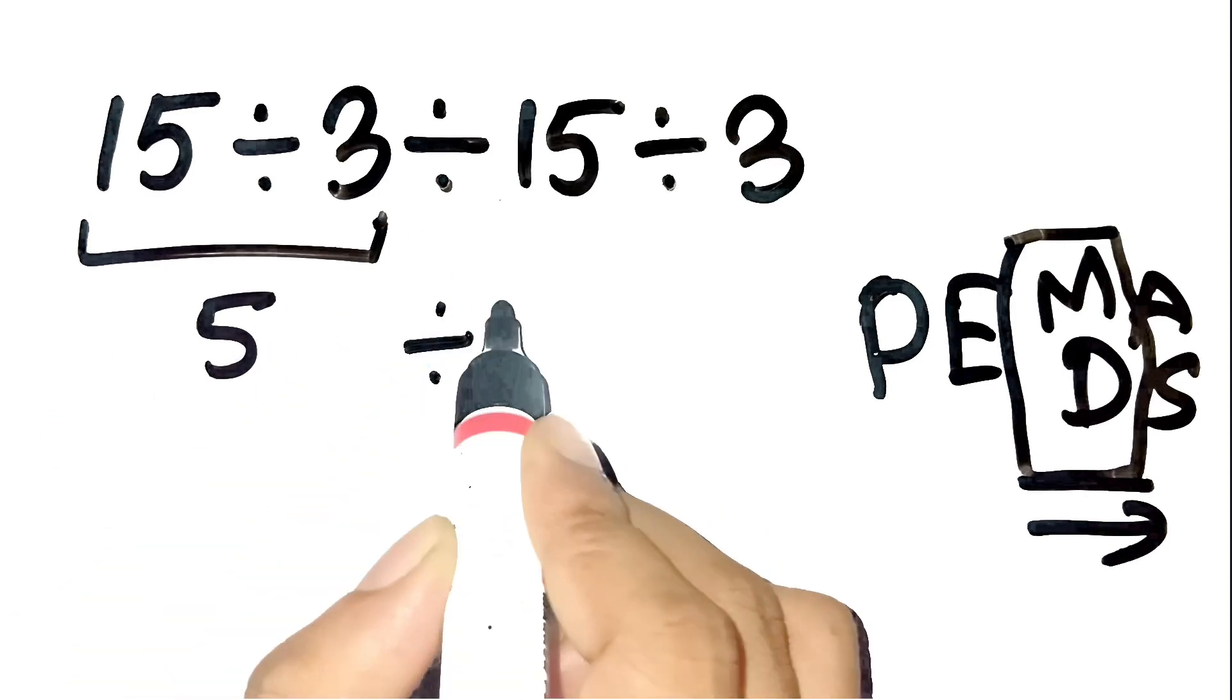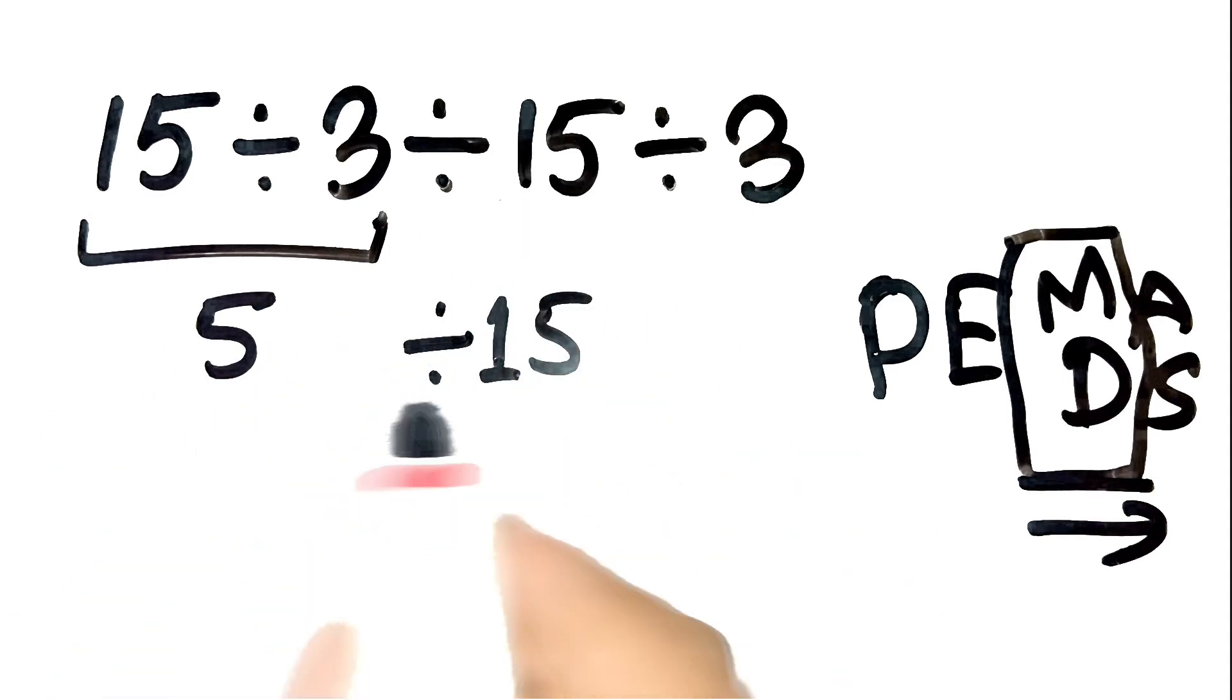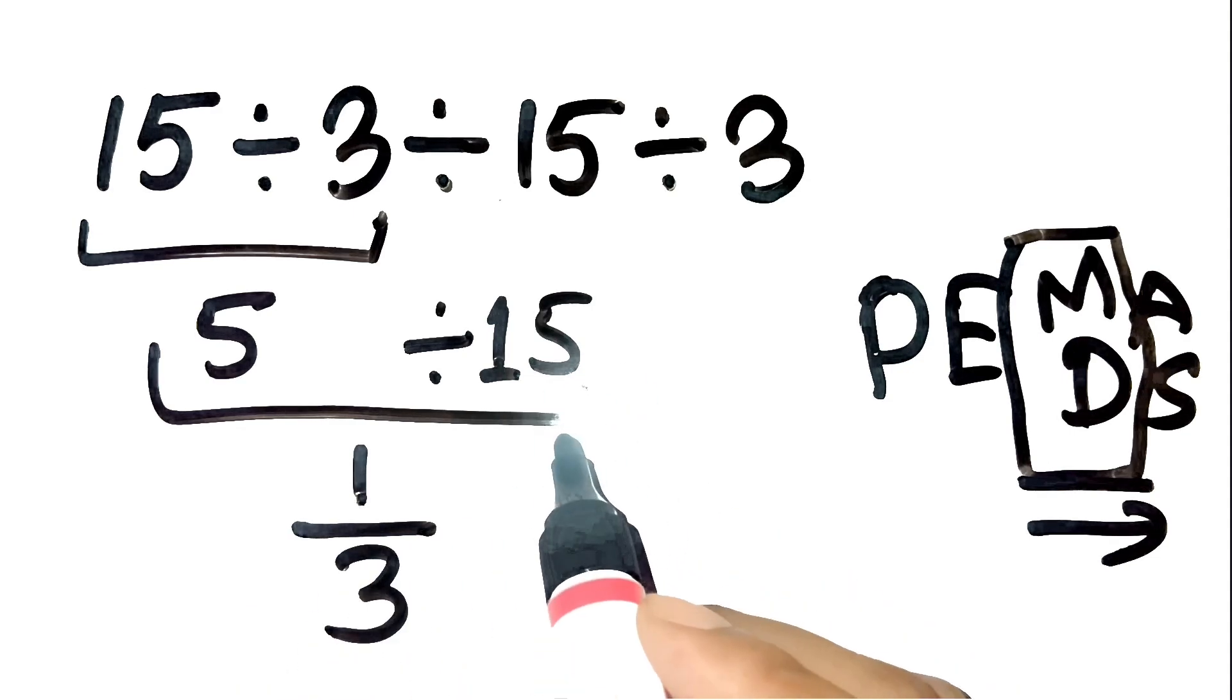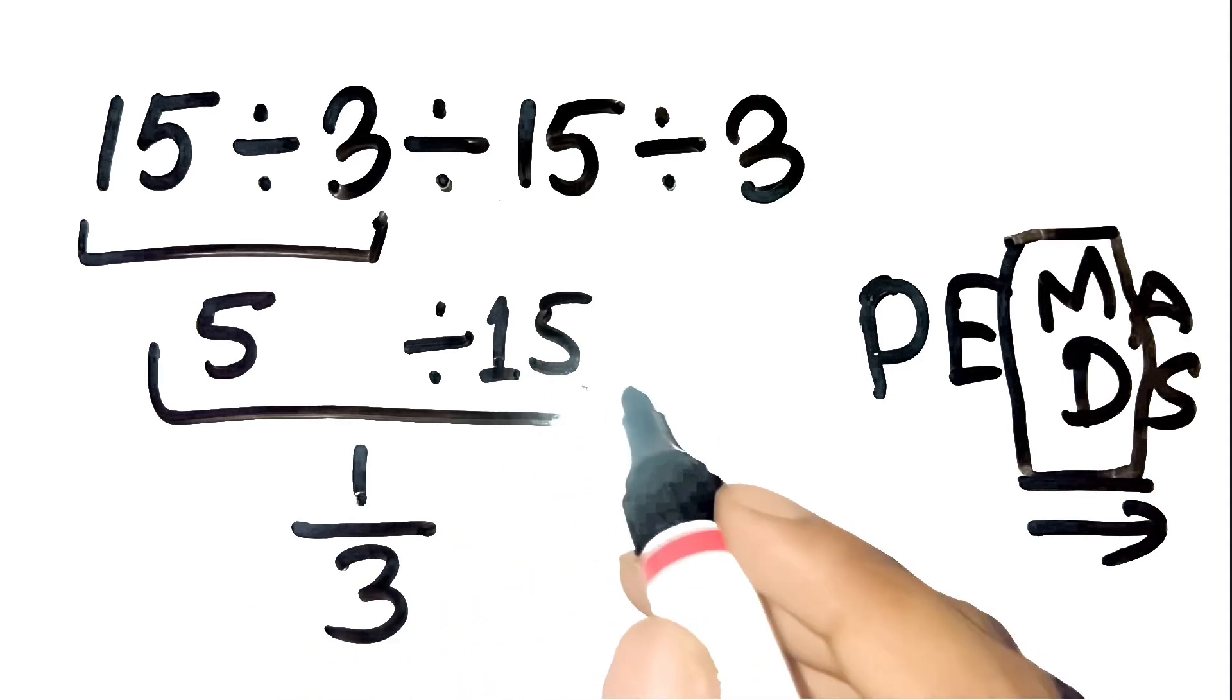Now, take that 5 and divide it by the next number, 15. So, 5 divided by 15 equals 1 third, or 0.333 and so on.